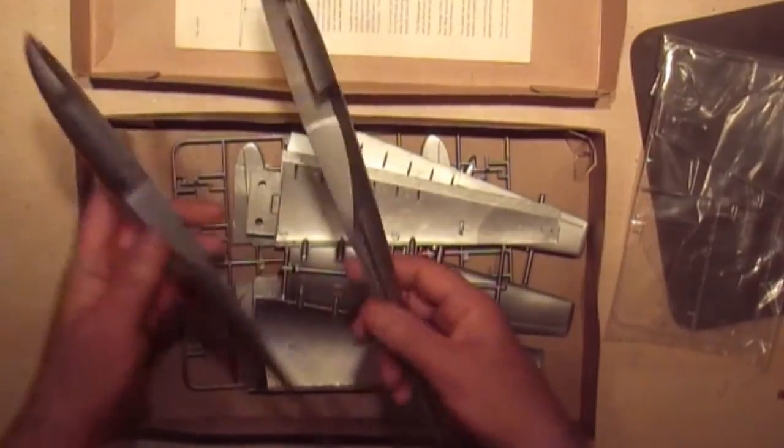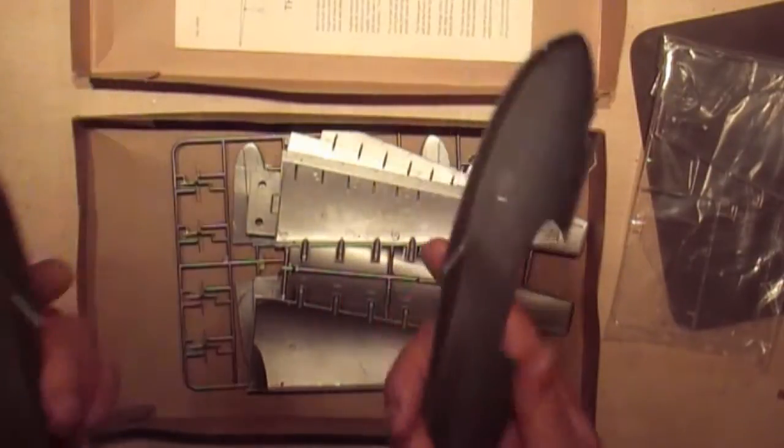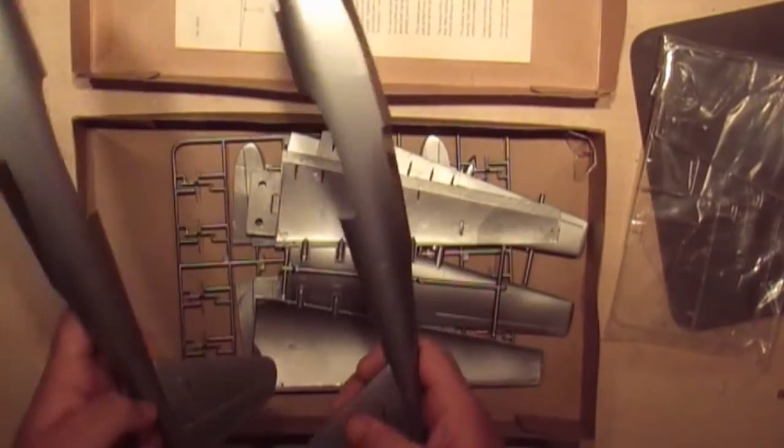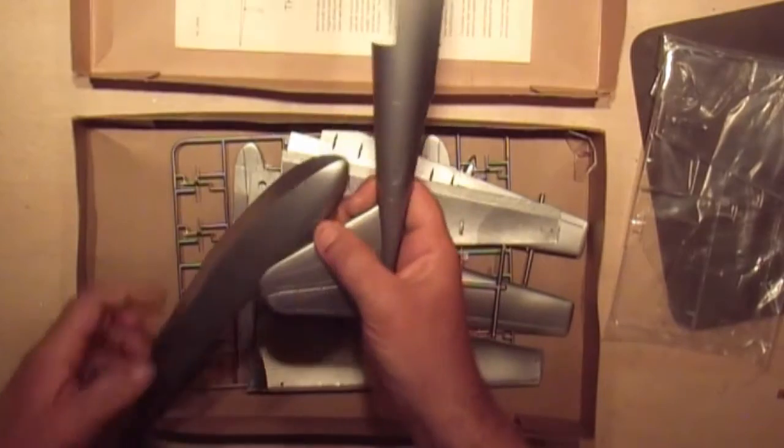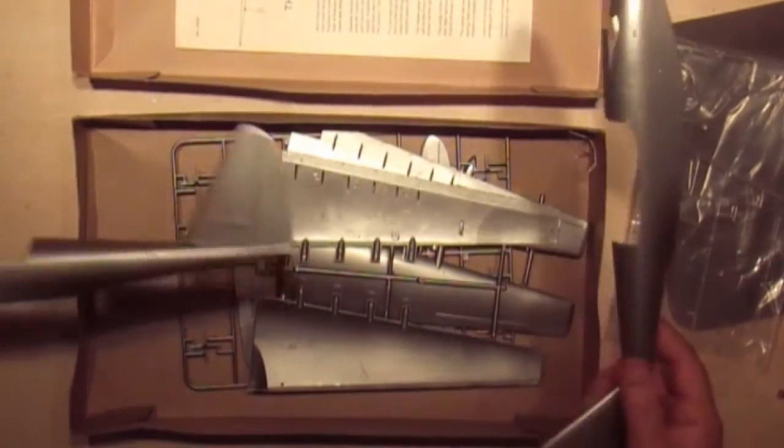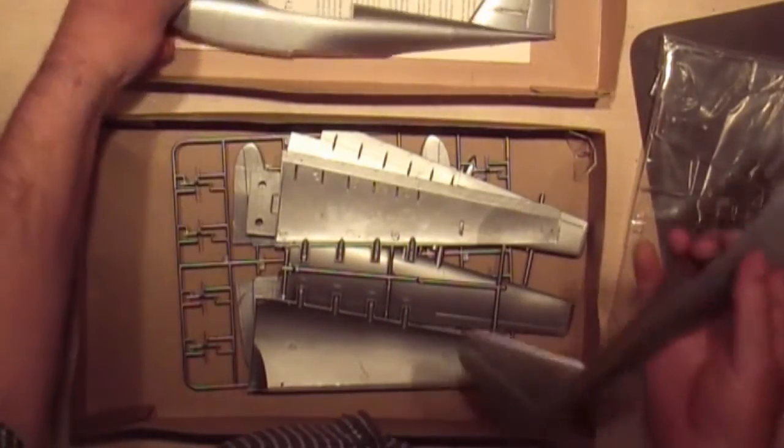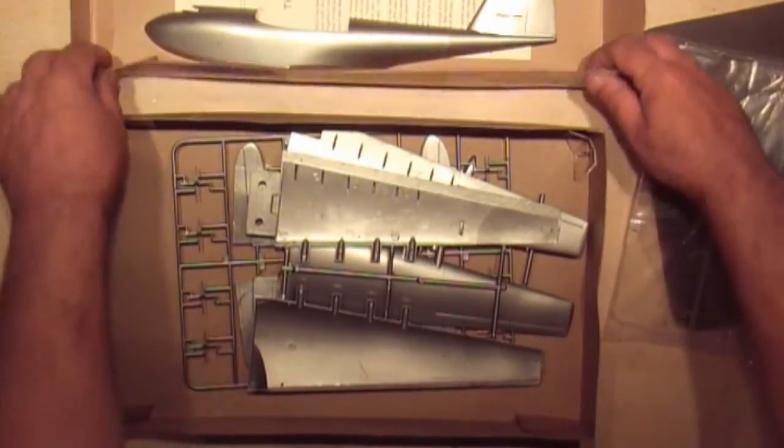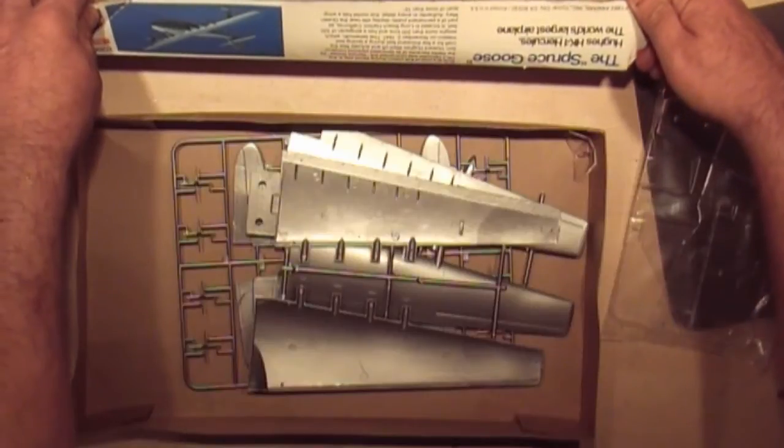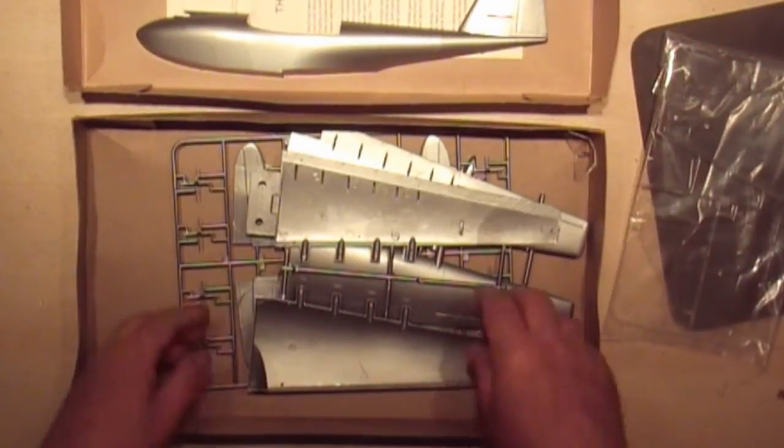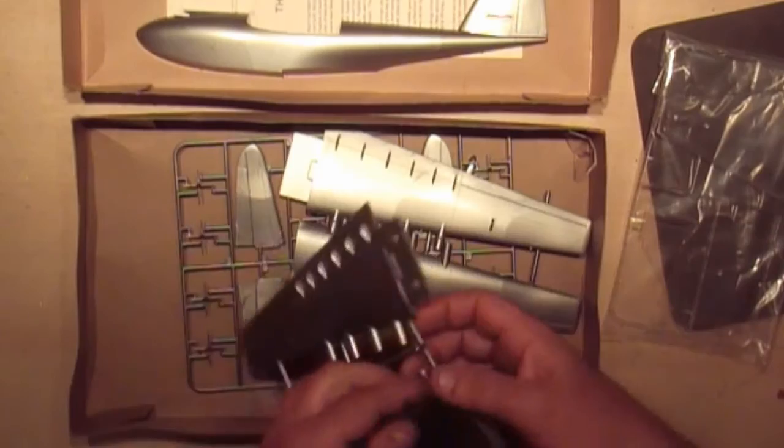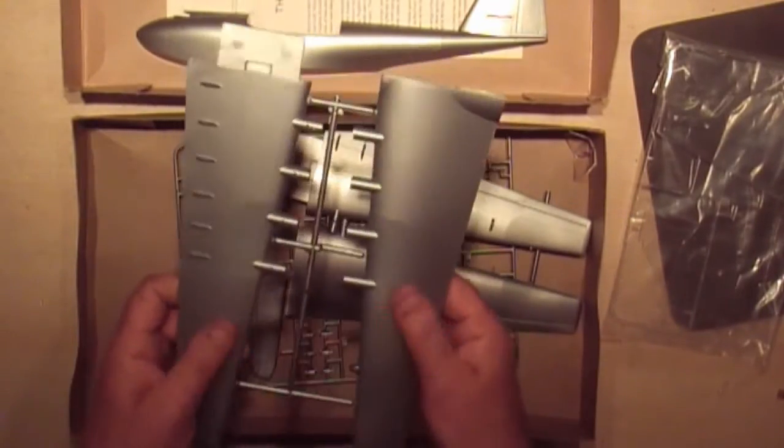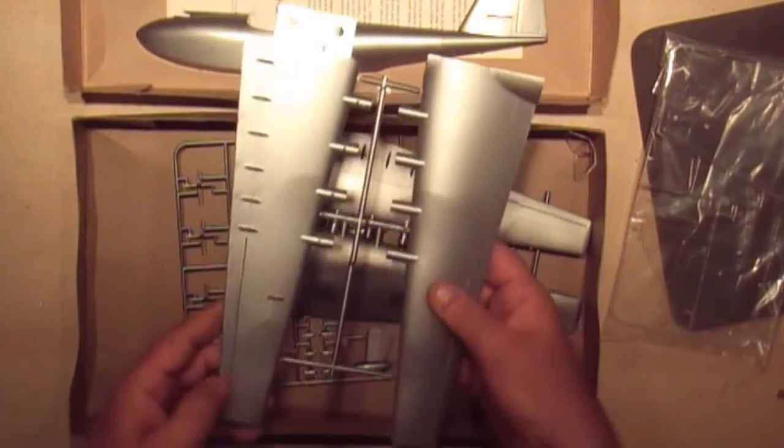They're quite old and they feel a bit brittle but they should be okay. I'll probably get rid of those. Two fuselage halves - they are recessed panel lining which I'm quite pleased with, especially the age of this particular model. I'm not sure when this was done.